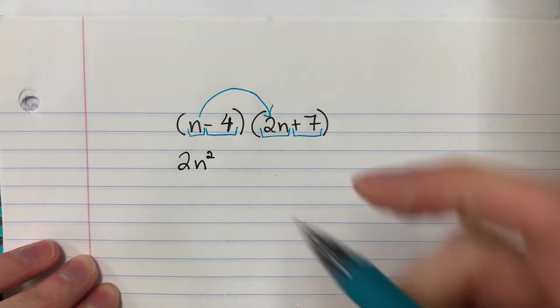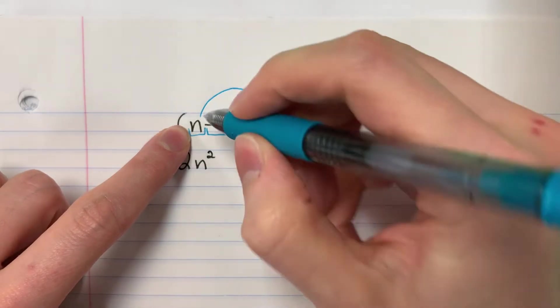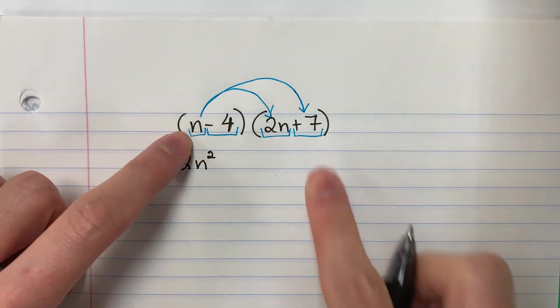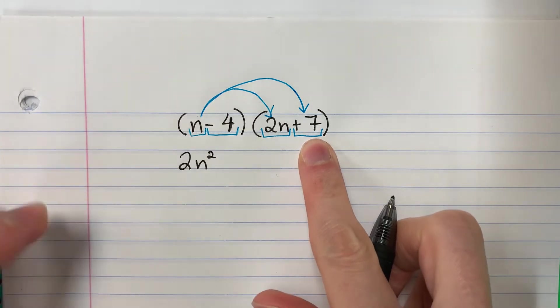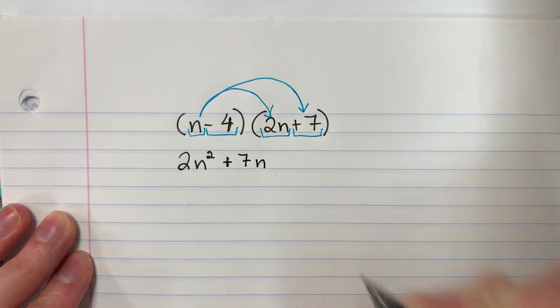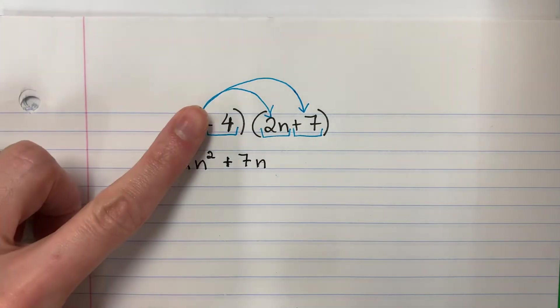Now we're going to do the n again, otra vez. Times positive 7, n times positive 7, n por positivo 7, positive 7n. Okay, so we're done with this one now. We're going to go ahead and move on.